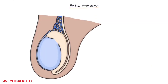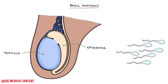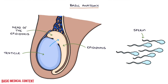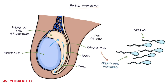Let's talk about some very basic anatomy. At the back of each testicle is the epididymis. Sperm are released from the testicle into the head of the epididymis, which is connected to the top of the testicle. The sperm travel through the head, then the body, and then to the tail of the epididymis. The epididymis is where the sperm are matured and stored until they're eventually released into the vas deferens.